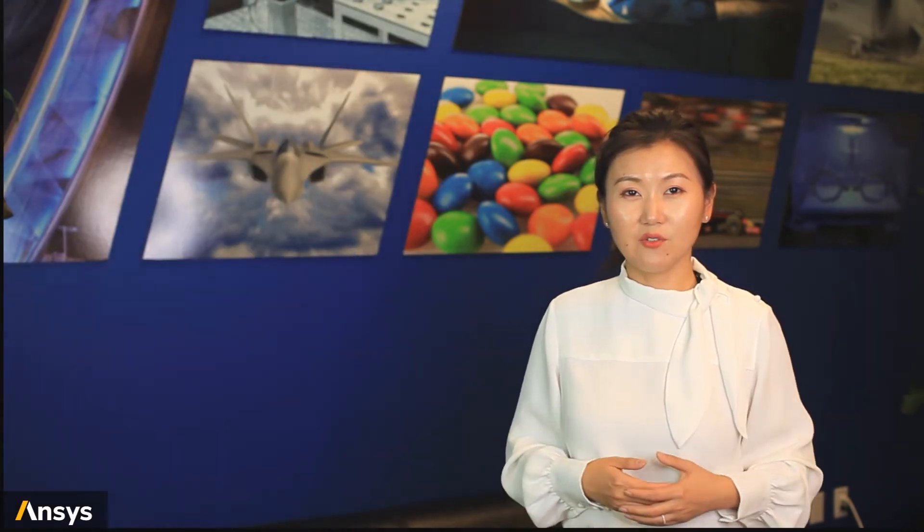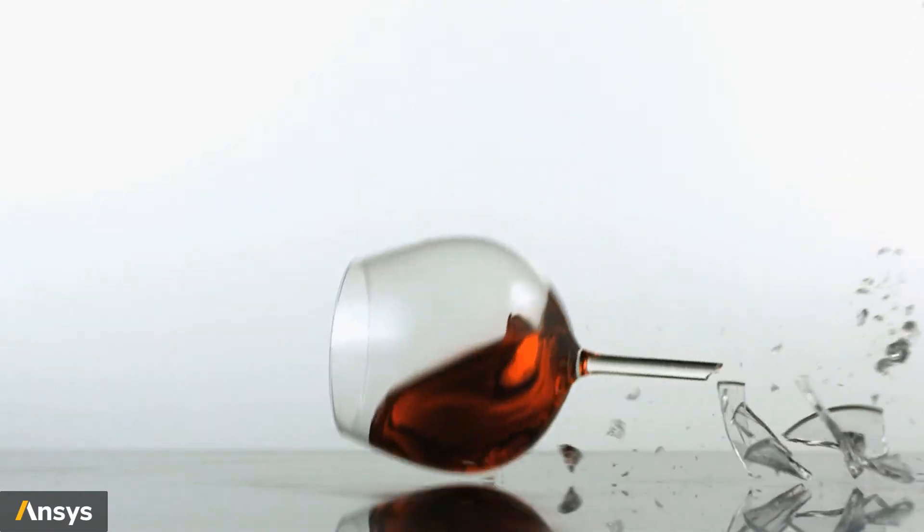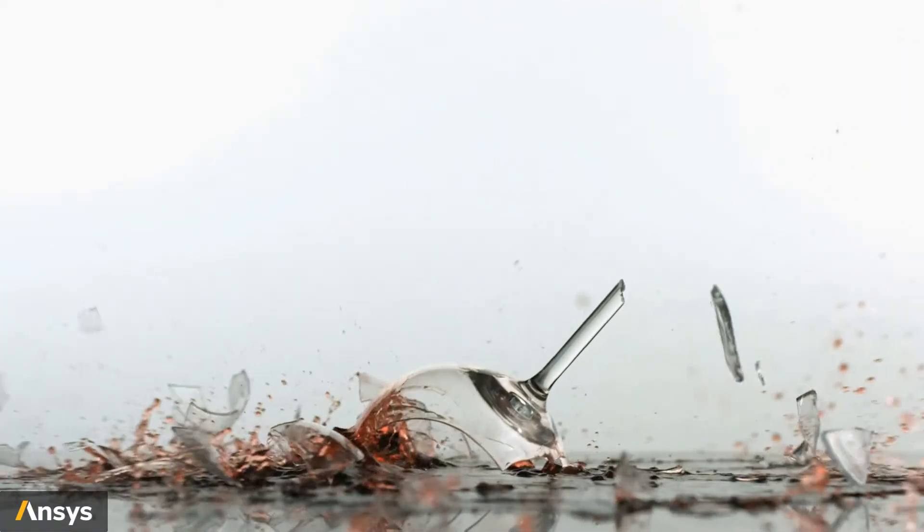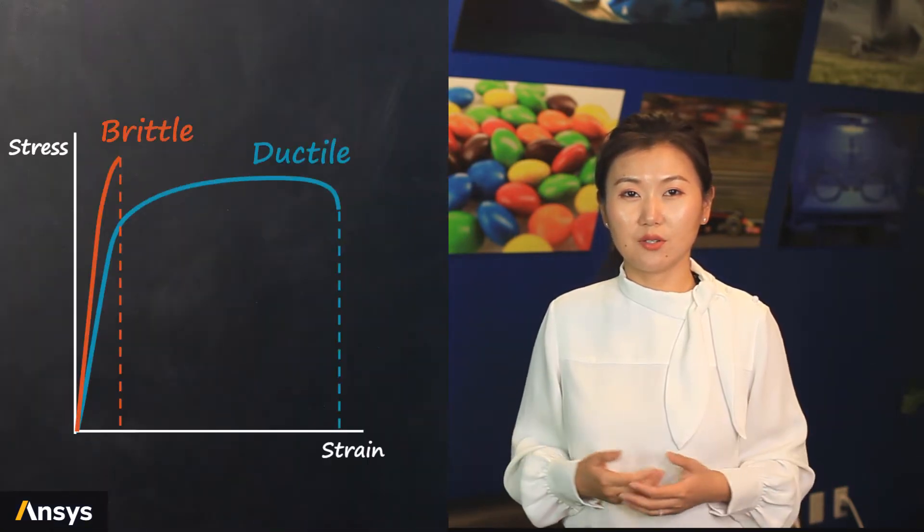On the other side, for the wine glass, it broke to numerous small pieces without much distortion within the material. We call material with such behavior brittle materials.